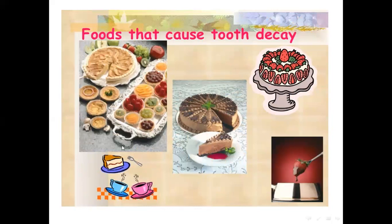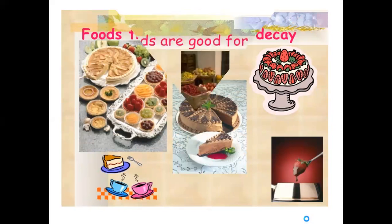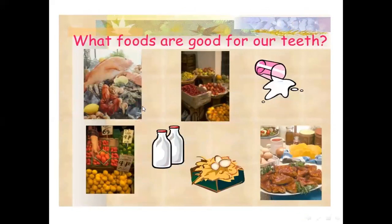These types of foods you must avoid: don't eat cakes, chocolates, coffee, or tea, and don't take these types of drinks. But these foods are good for your teeth: take protein, fruits, vegetables, egg, and milk. So your teeth will be strong and healthy.